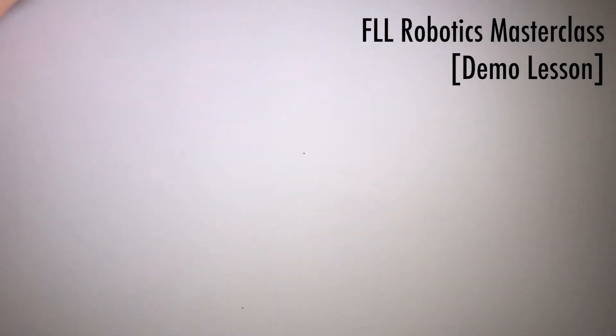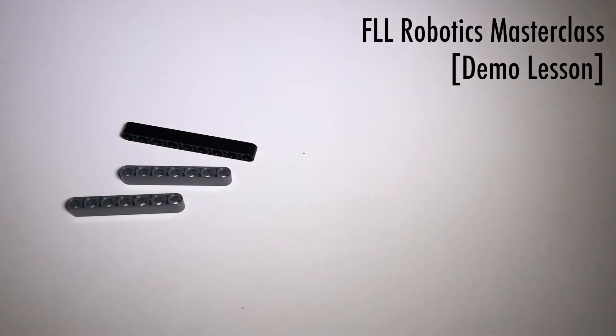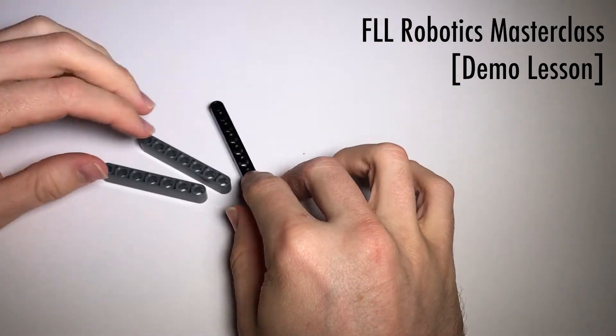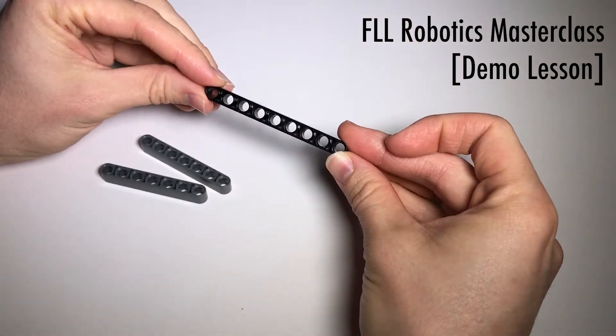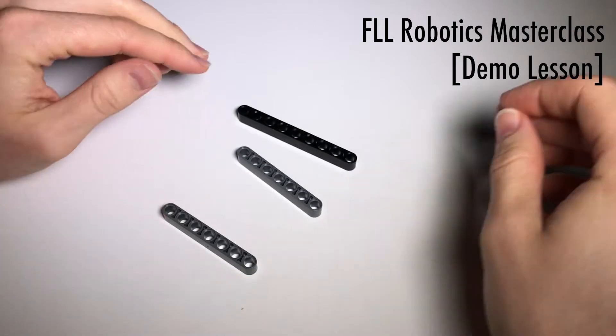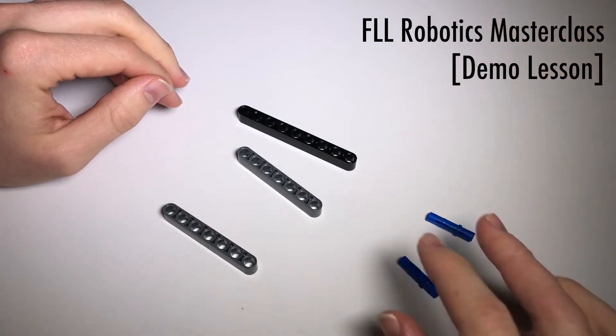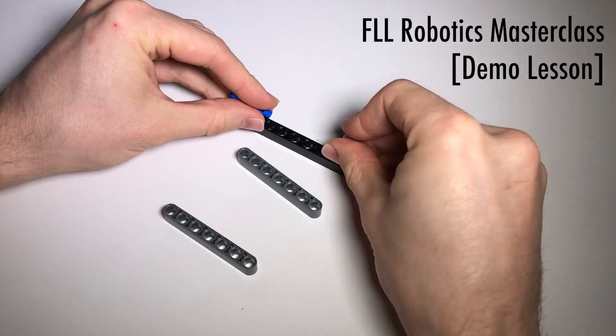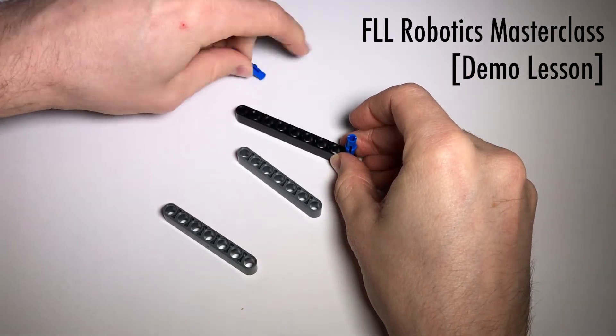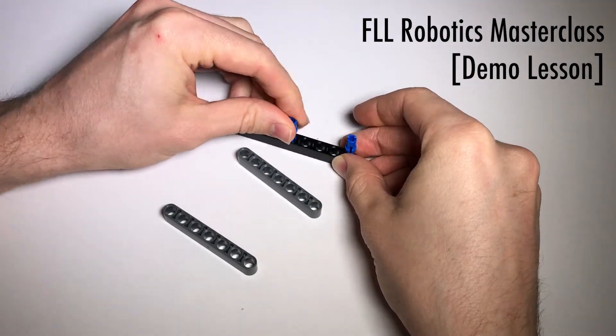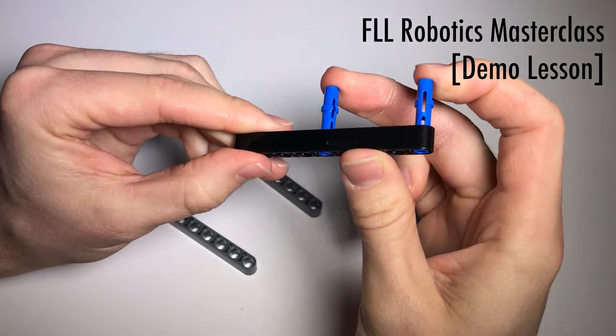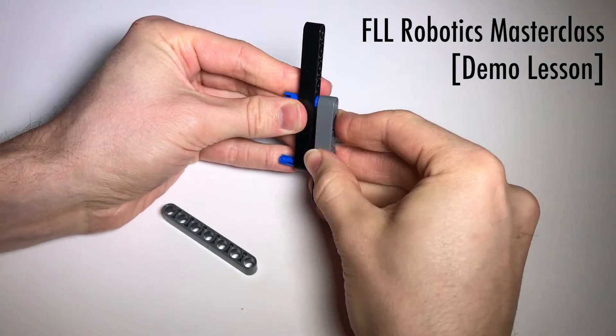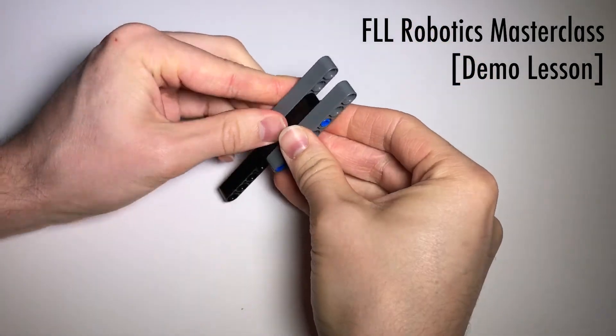So let's build one. I'm going to grab three beams, and of course you don't have to have exactly these beams, but if you're trying to follow along as closely as possible just to be safe, this is a nine-length beam, and these are sevens. Now I will get two triple pegs and attach them like so.